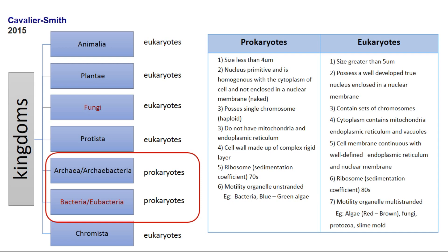The fourth sign is the presence of mitochondria in the cell — only eukaryotes have mitochondria and endoplasmic reticulum. The fifth sign is the structure of the cell wall — prokaryotic cell wall is made up of a complex rigid layer, while eukaryotic cell wall is associated with a well-defined endoplasmic reticulum and nuclear membrane. The sixth sign is the sedimentation coefficient of ribosomes — 70S for prokaryotes and 80S for eukaryotes. The seventh sign is the presence of motility organelles — in prokaryotic cells it is single-stranded, in eukaryotic cells it is multi-stranded.